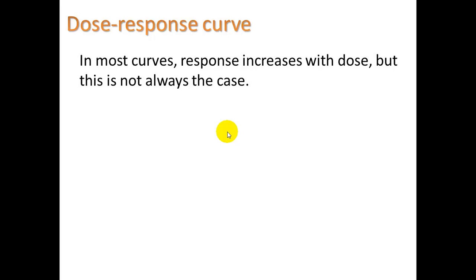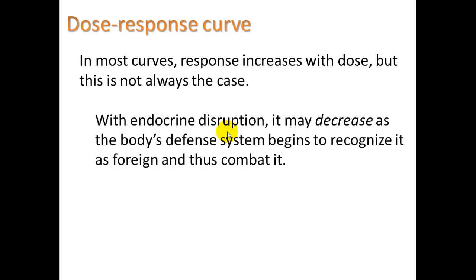A little more information on the dose response curve: usually the response increases with the dose, but this is not always the case. With endocrine disruption, the response may actually decrease as the body's defense system begins to recognize it as foreign and combat it. Endocrine disruptors can affect the body at very low concentrations — so low they often go under the radar. But if concentrations get high enough, the immune system would recognize it and begin to break it down as a toxin in the liver.